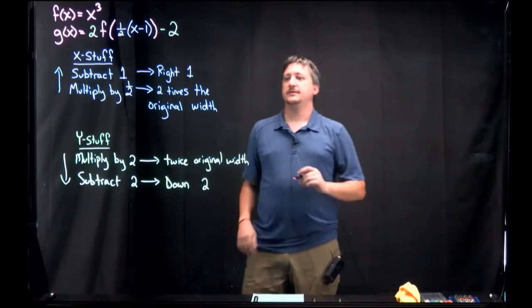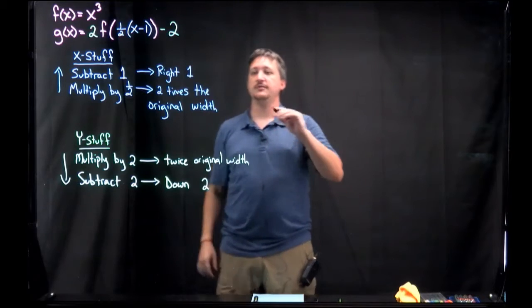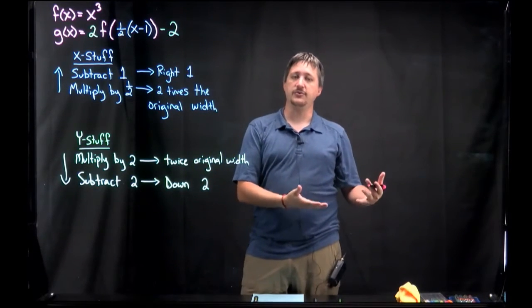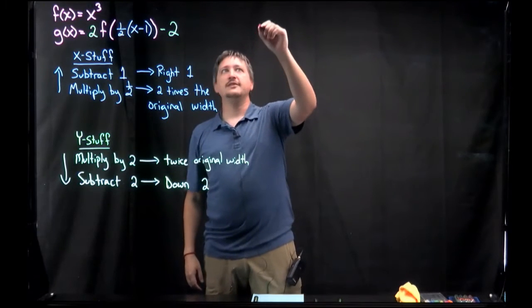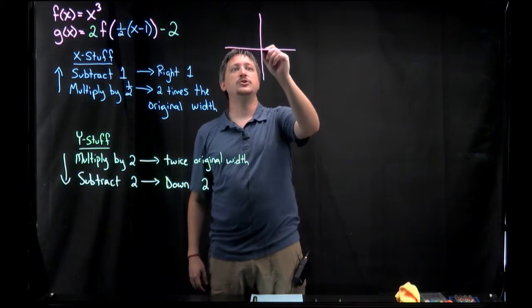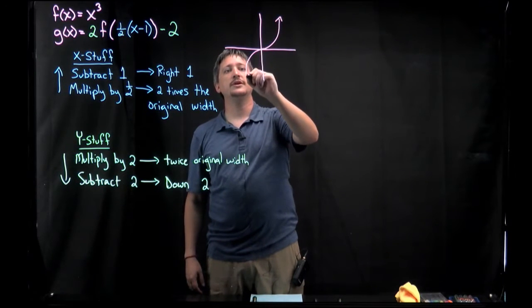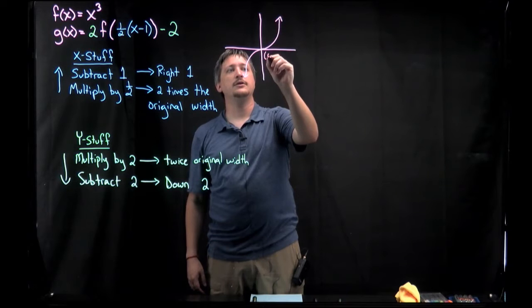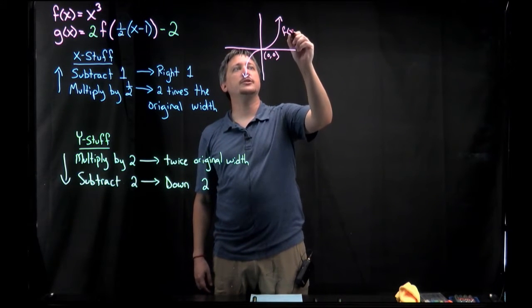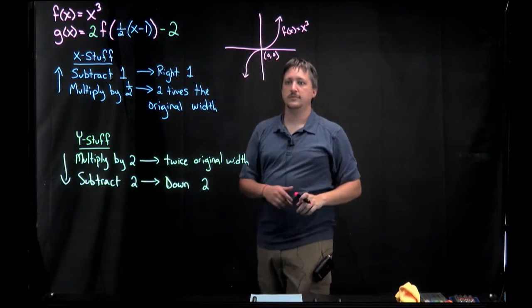So going back, let's start with our original graph, our original f of x. We're going to graph each of these events one at a time until we get our end graph. So our first graph, if you remember our cube, should look like this with a spot at 0, 0. And this is just our straight up f of x, which I'll make a note here is x cubed.